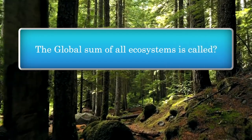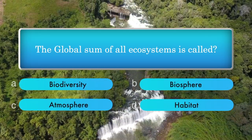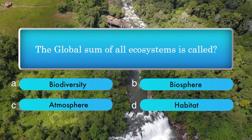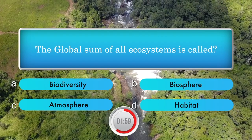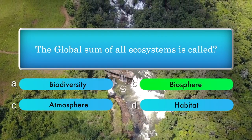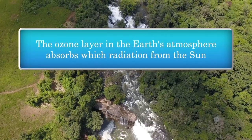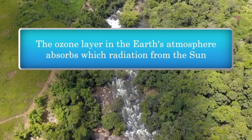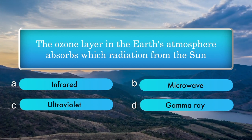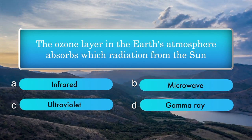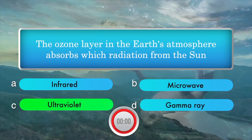The global sum of all ecosystems is called — options: biodiversity, biosphere, atmosphere, habitat. Answer is biosphere. The ozone layer in the Earth's atmosphere absorbs which radiation from the Sun? Options: infrared, microwave, ultraviolet, gamma ray. Answer is ultraviolet.